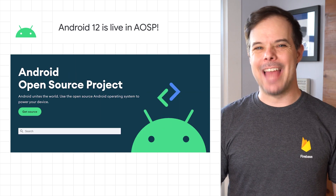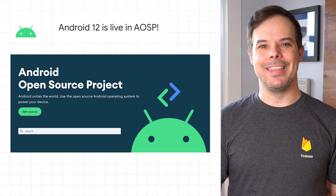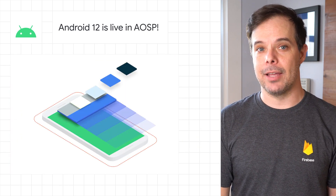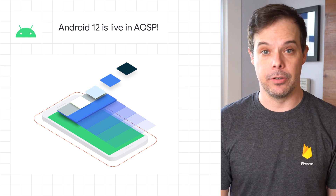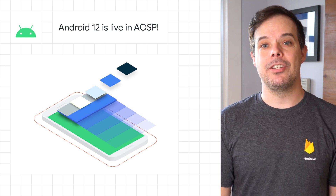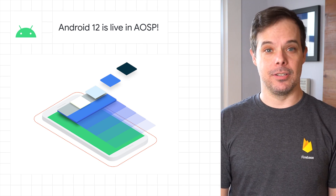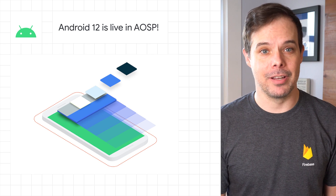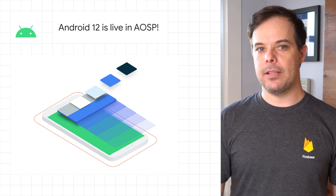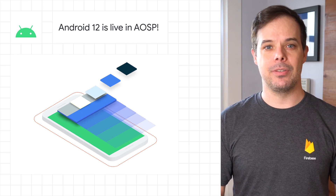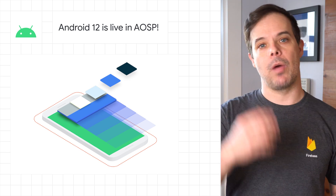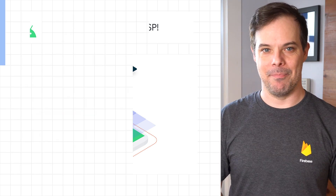Android 12 is now available in the Android Open Source Project. It includes a new design language called Material U, refreshed app widgets and notification designs, app launch splash screens, and more. Head on over to the post linked in the description below on YouTube or by swiping up on Instagram for all the details.